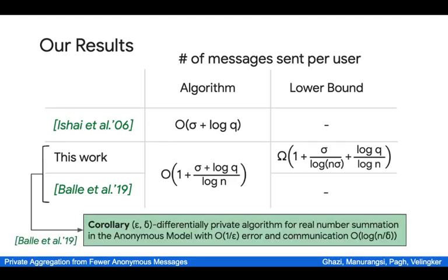Furthermore, we also give a nearly matching lower bound for aggregation. In particular, when the security parameter sigma is no more than polynomial in n, our lower bound matches the upper bound up to a constant factor. Thanks to a reduction of Ballet et al., the improved analysis also translates to an improvement in differentially private summation, yielding an epsilon-delta differentially private algorithm with error of order 1 over epsilon and communication of log of n over delta per user. For the rest of this talk, we focus on the proof outline of our improved analysis and our lower bound.